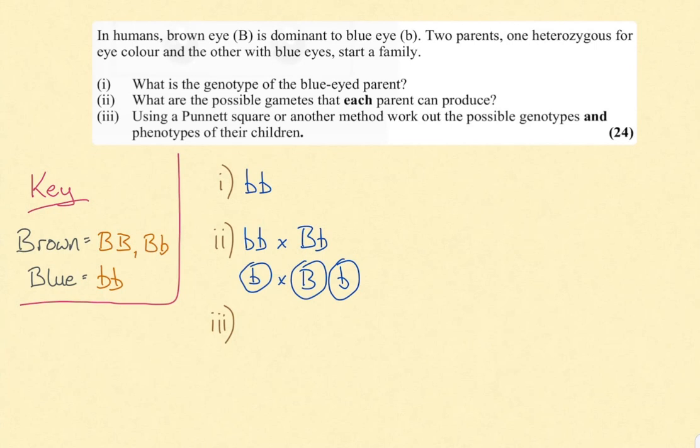Step four, the Punnett square or genetic cross. This is where you will cross the gametes with one another. The setup is always the same. Place an X in the top left corner and fill one set of the gametes vertically and the other horizontally.